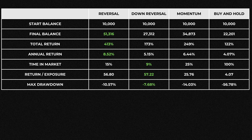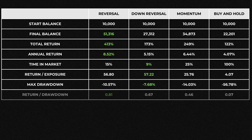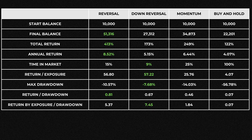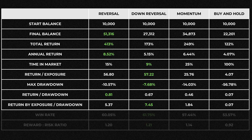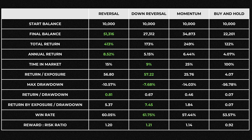For max drawdown, down reversal takes the crown — being more selective is giving it better results. Return over drawdown is a little more mixed. Then we come to the overall composite metric that accounts for annual returns, time in the market, and max drawdown combined into one score. Reversal scores 5.37, buy and hold only 0.07, momentum 1.84, but the down reversal strategy scores 7.45. Adding in win rate and average risk-reward, it does look like down reversal is the better strategy — it doesn't trade quite as often, but the trades it takes seem to be higher quality.